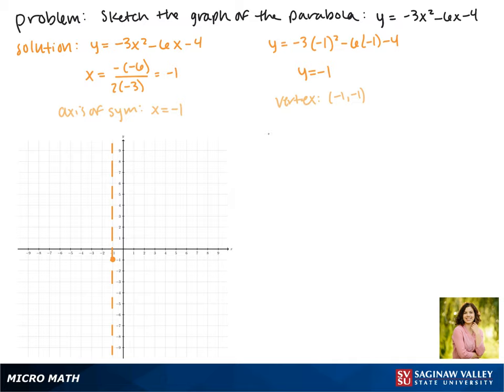Next we can find the y-intercept by plugging in 0 for x. This gives us y equals negative 3 times 0 squared minus 6 times 0 minus 4, which altogether gives us the y-intercept of 0, negative 4. Here it is on the graph, and then because of the symmetry of our parabola we know that negative 2, negative 4 is also a point.